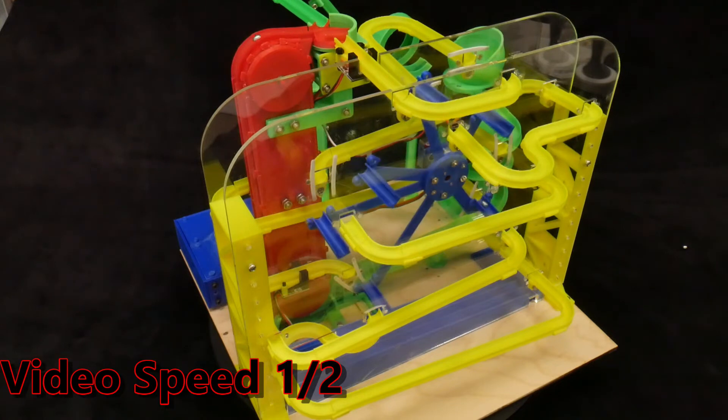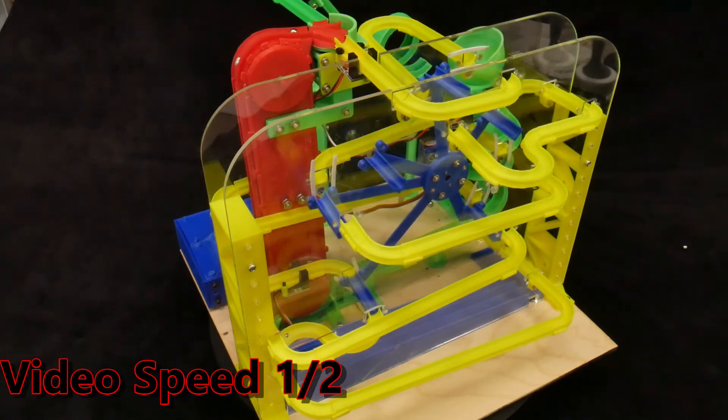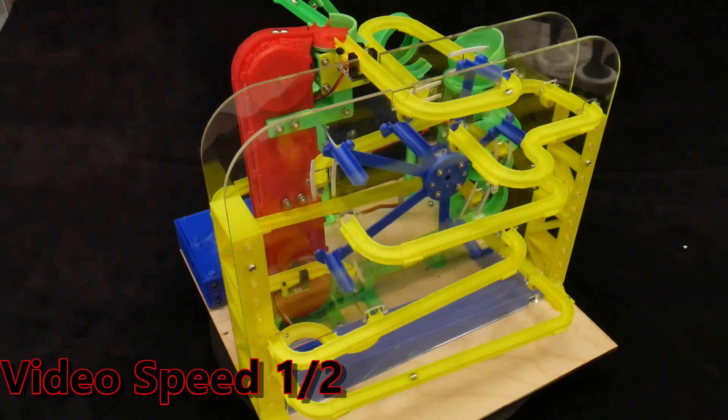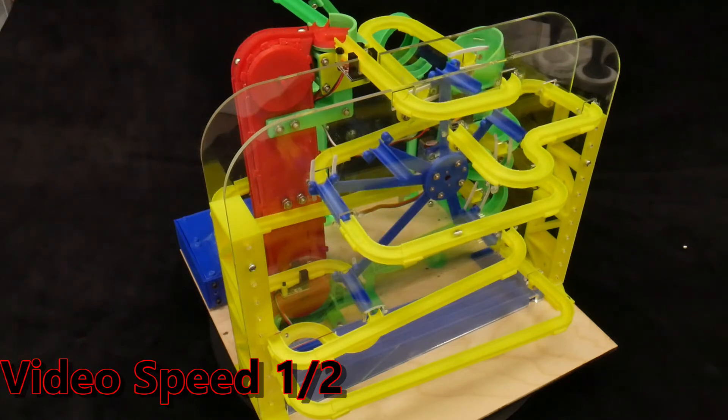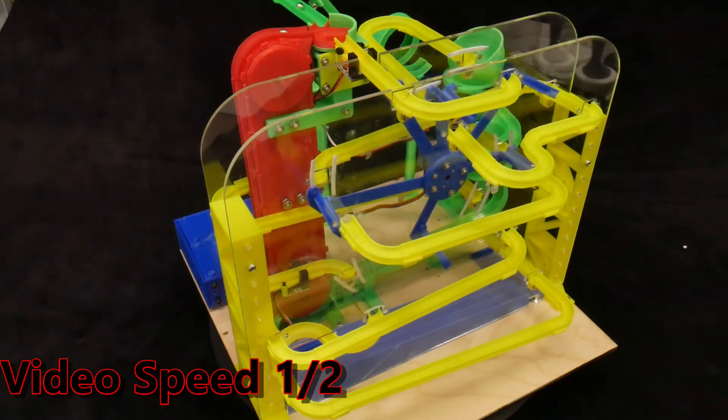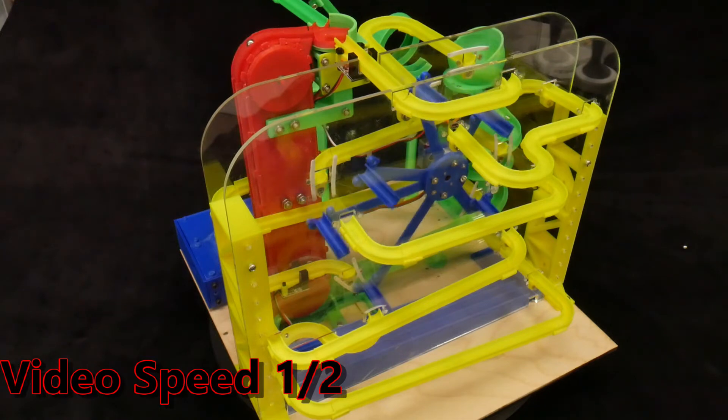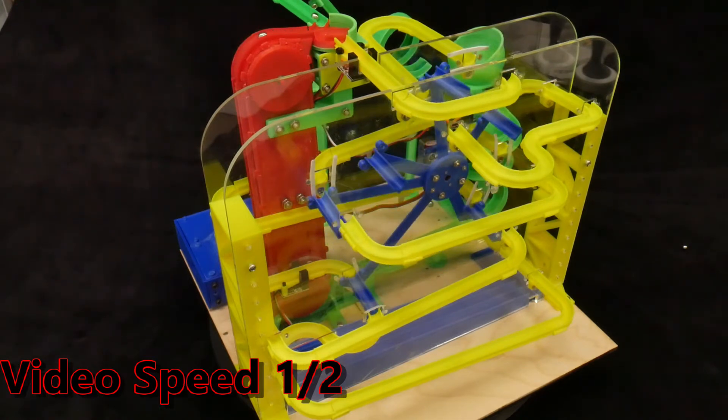As a marble rolls down the yellow track, one of six blue bridges must fall into place at the exact right time. All six bridges are attached to the same rotor and when one bridge is rotated into its proper place, five other bridges are out of place.